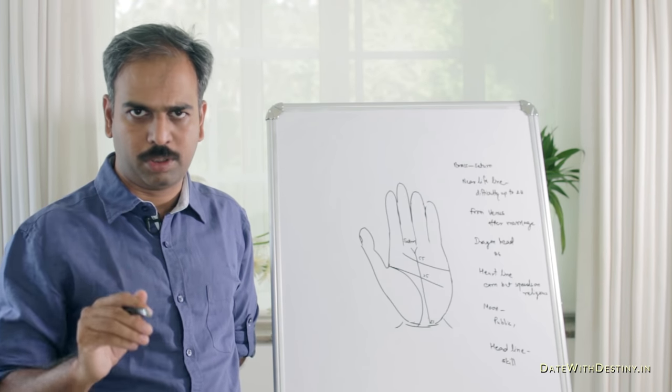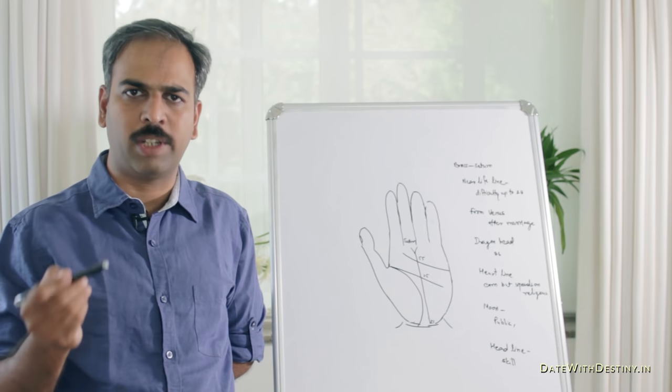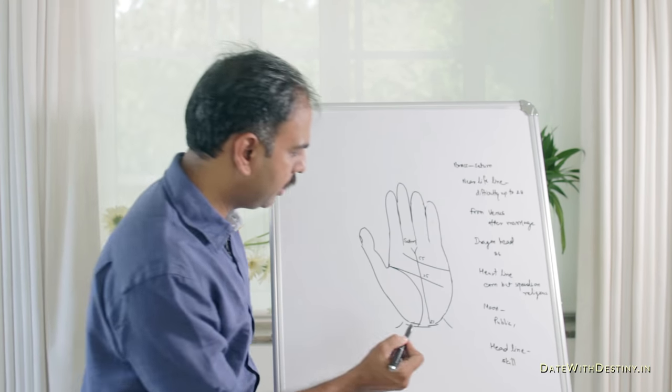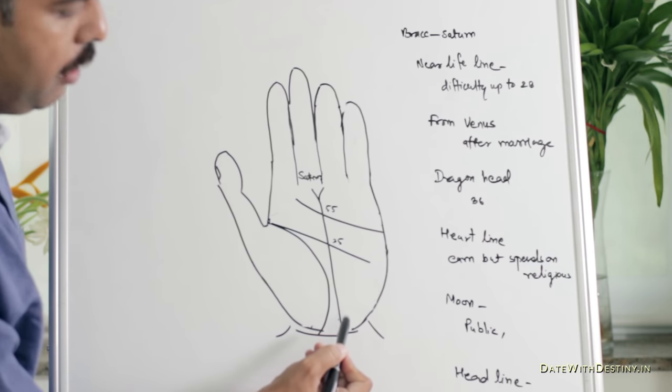Now, we will see the Indian point of view. There are four to five types of lines, according to Indian view, which will give you results. This is the first. If the Fate Line is starting from the bracelet lines,